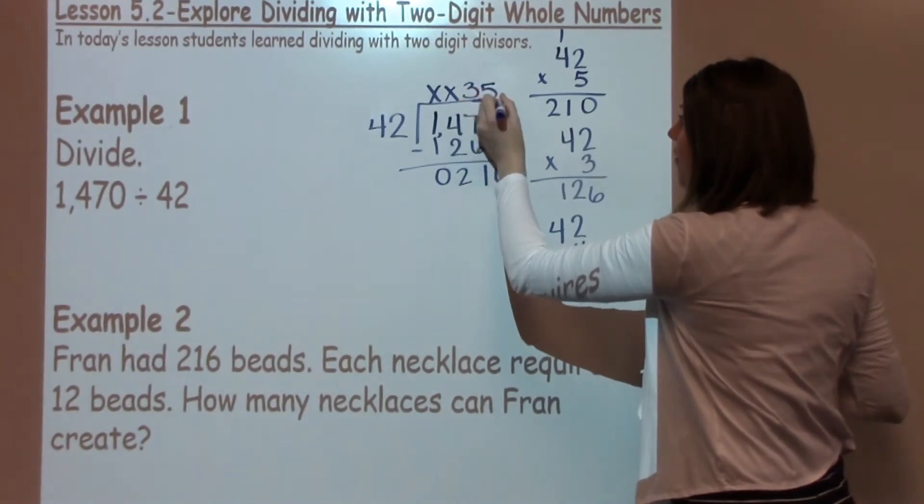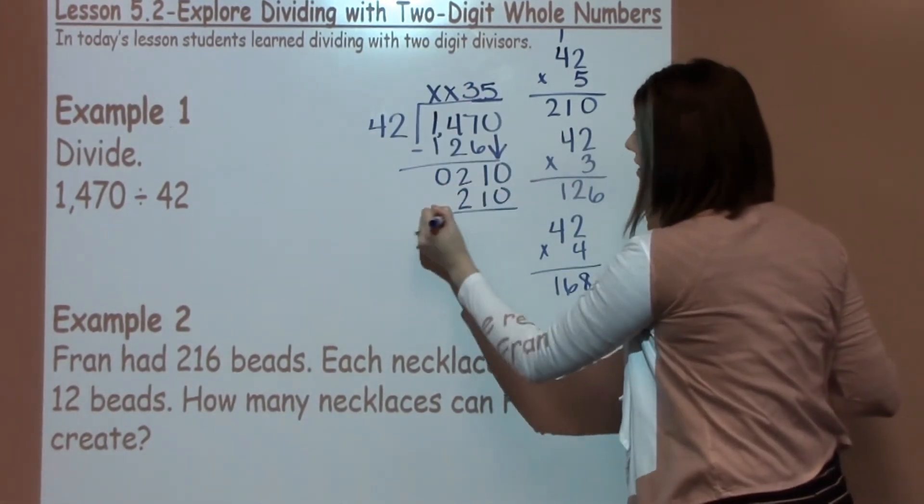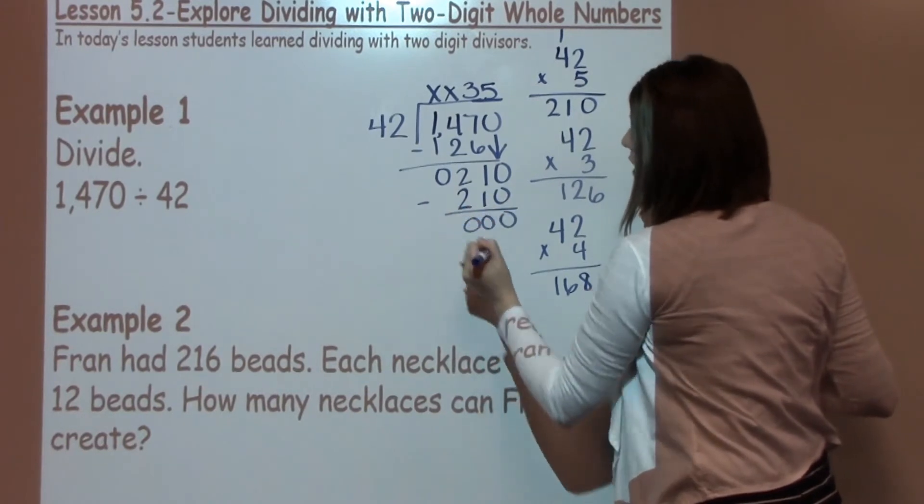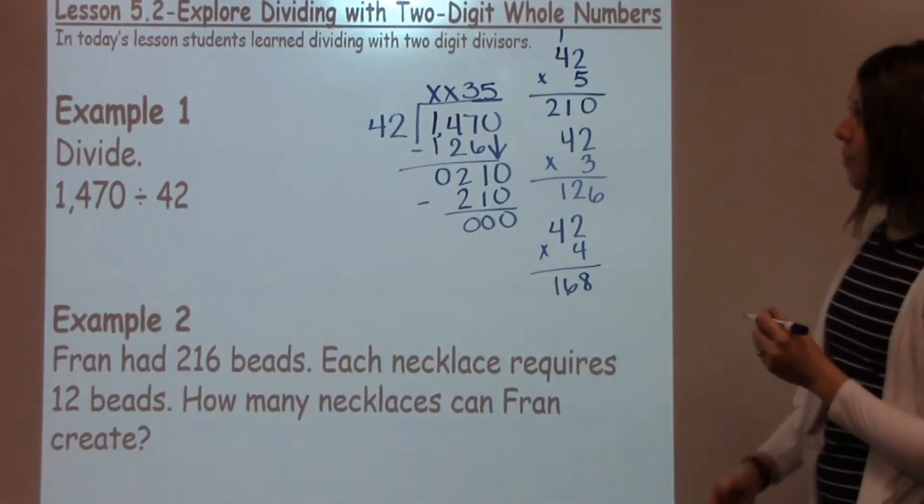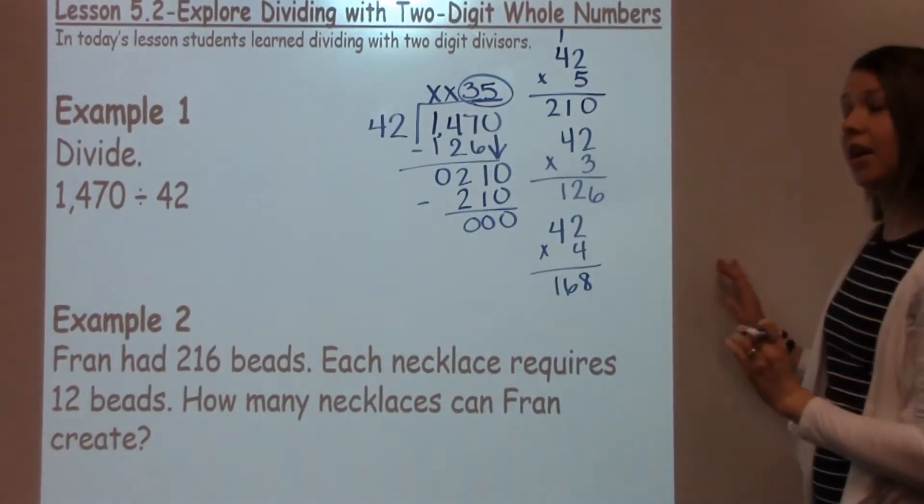I'm going to put a 5 over here because I know 5 times 42 is 210. So the quotient, or my answer to this problem, is 35. Notice I do not have a remainder in this problem.